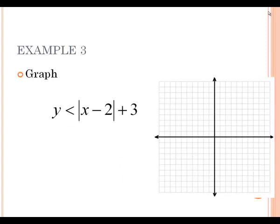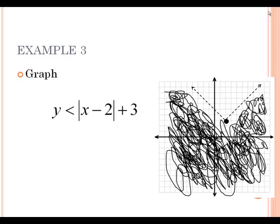On example 3, we have an absolute value graph. Absolute value graphs are the shape of a V. This V has been shifted to the right 2 and up 3 — right 2 because of the minus 2 inside the absolute value, and up 3 because of the plus 3 at the end. So that's where we start our vertex, or the bottom of our V, at right 2, up 3. Draw the V as a dotted line, and we're shading everything below the V.